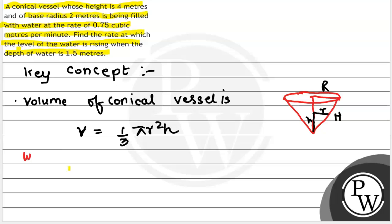Now, we have R equals 2 meters and H equals 4 meters. Also, the rate of water is given.